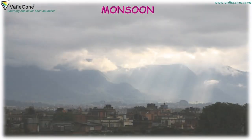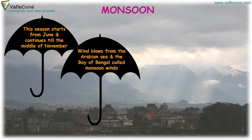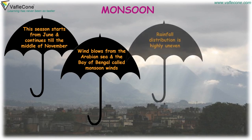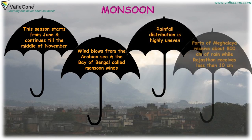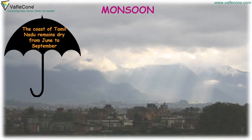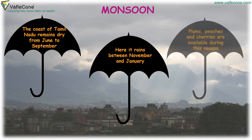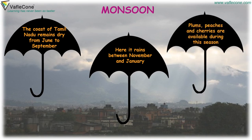Monsoon. This season starts from June and continues till the middle of November. Wind blows from the Arabian Sea and the Bay of Bengal — called monsoon winds. Rainfall distribution is highly uneven. Parts of Meghalaya receive about 800 cm of rain, while Rajasthan receives less than 10 cm. The coast of Tamil Nadu remains dry from June to September; here, it rains between November and January. Plums, peaches and cherries are available during this season.